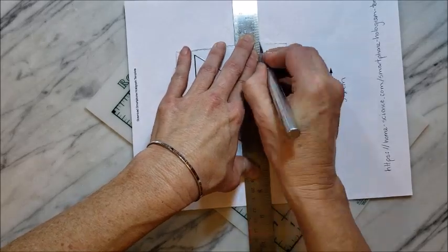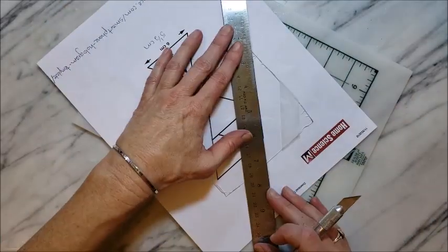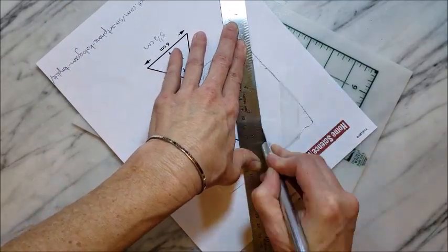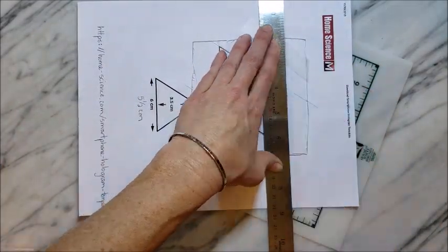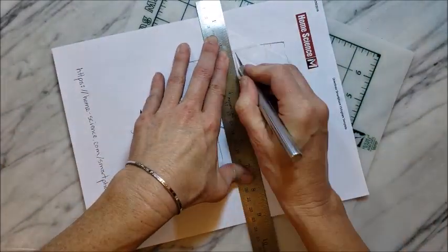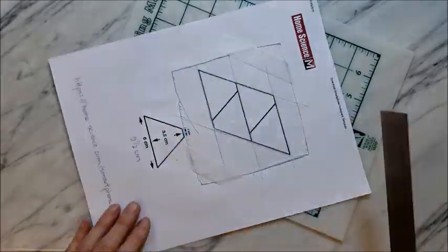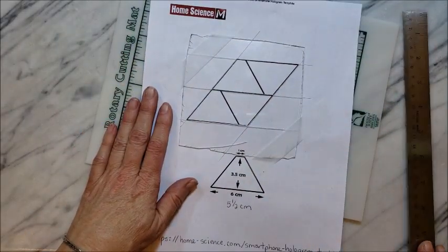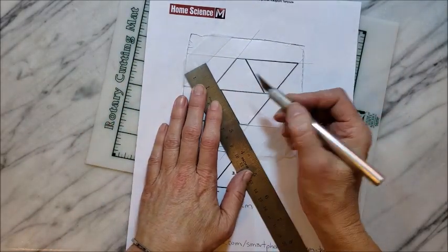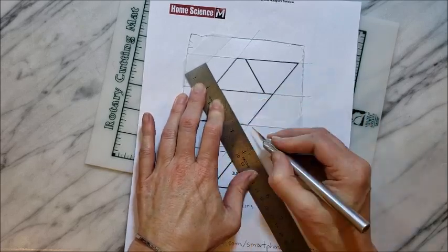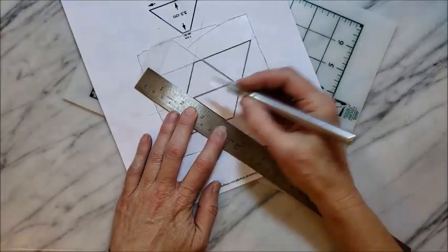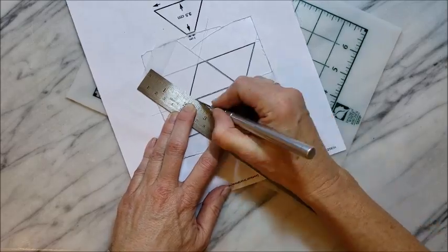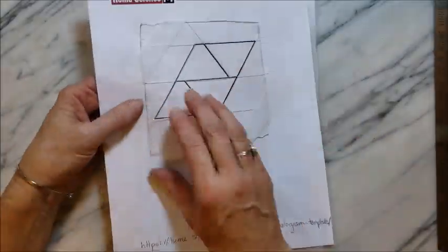You want to score all the way from edge to edge because you're going to be snapping the pieces off. So I started with all of the long sides and the first attempt I actually did not get very good breaks so I had to do it twice. So you want to make sure that your scores are fairly deep. And so I went over the lines a couple of different times.